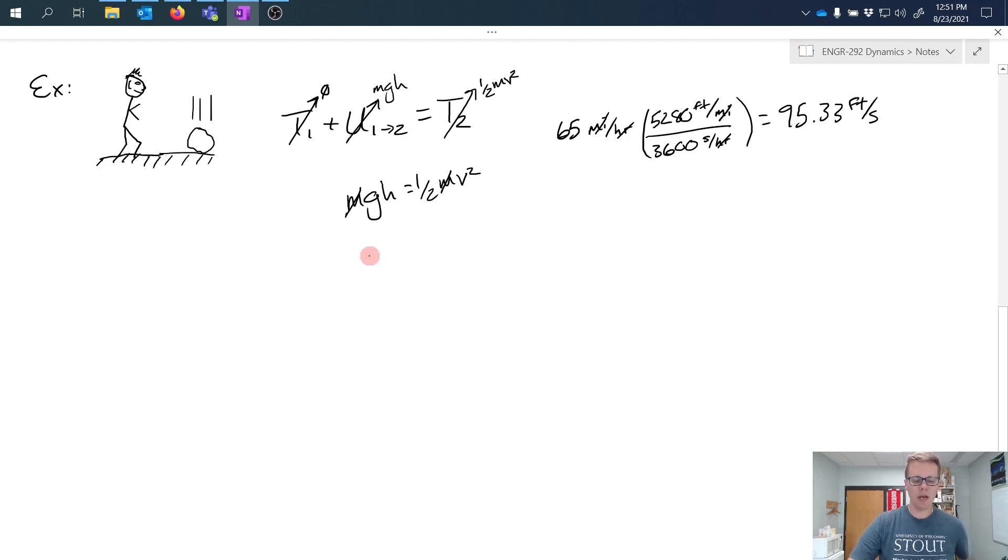So back to my equation, I'm going to substitute in what I know: 32.2 feet per second squared times height equals one half times 95.33 feet per second squared. Now if I go ahead and divide this across, I can solve and find that I get an h of 141.1 feet being my units here.